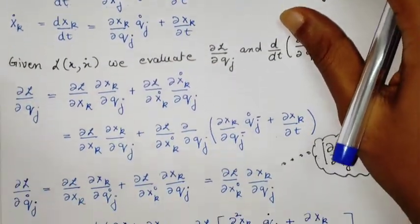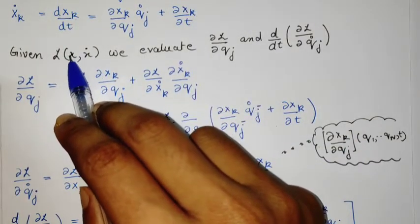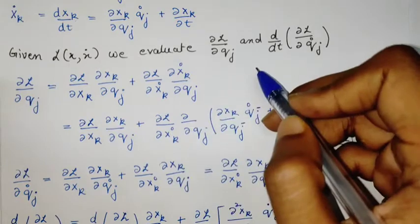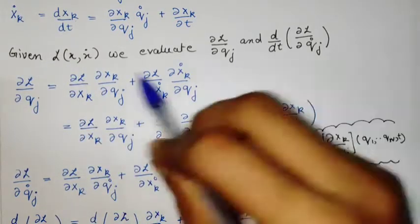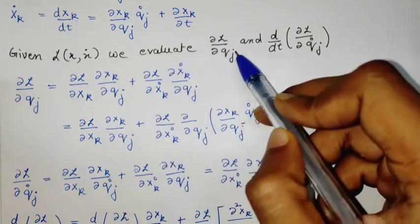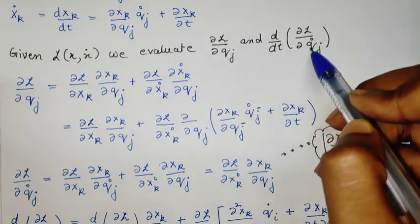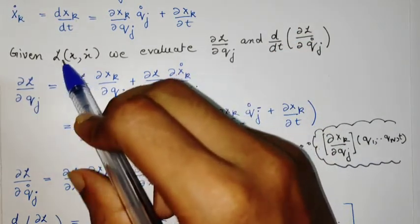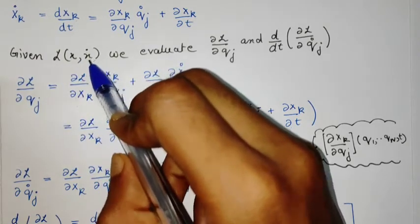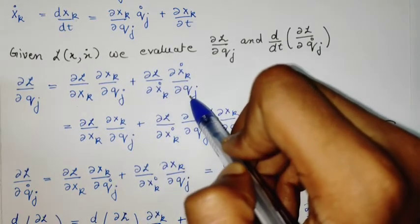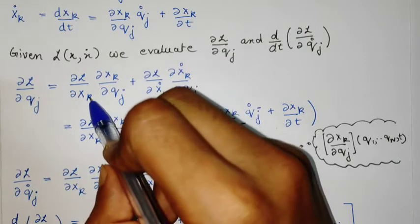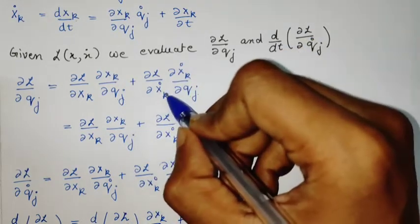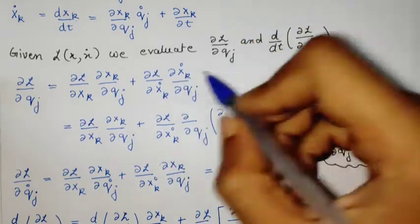Given a Lagrangian depending on the xi's and x_dot's — which are independent configuration space coordinates — we now evaluate ∂L/∂qj in the new coordinates. Using the chain rule, ∂L/∂qj is written as a partial derivative with respect to xi plus a partial derivative with respect to x_dot_i, giving two terms. A quick check confirms j is the free index, with summation over the other indices.